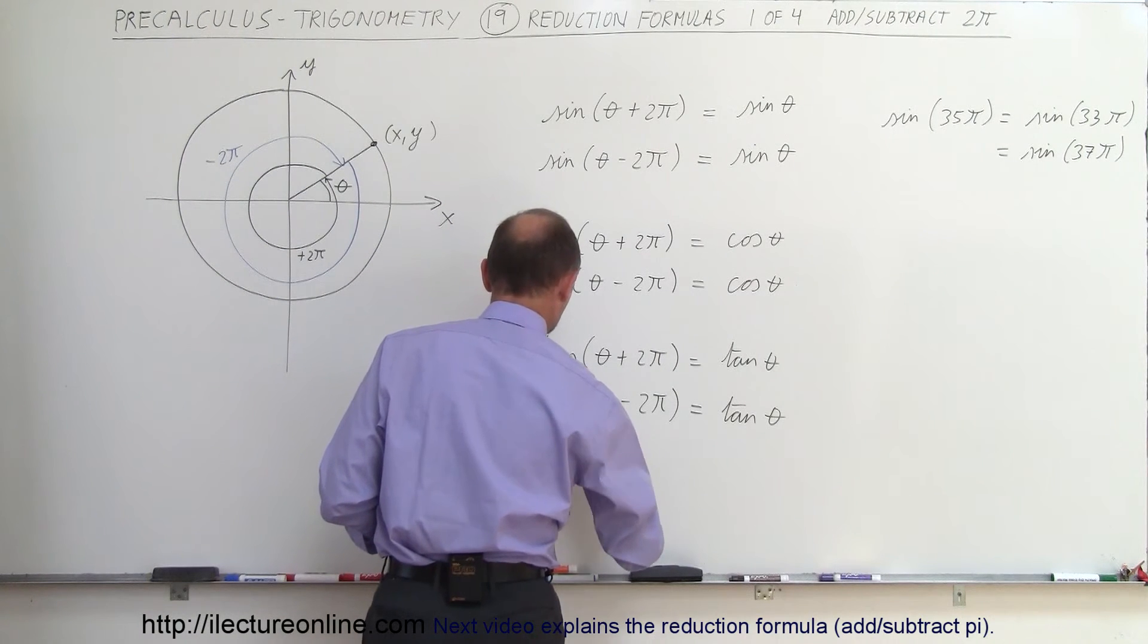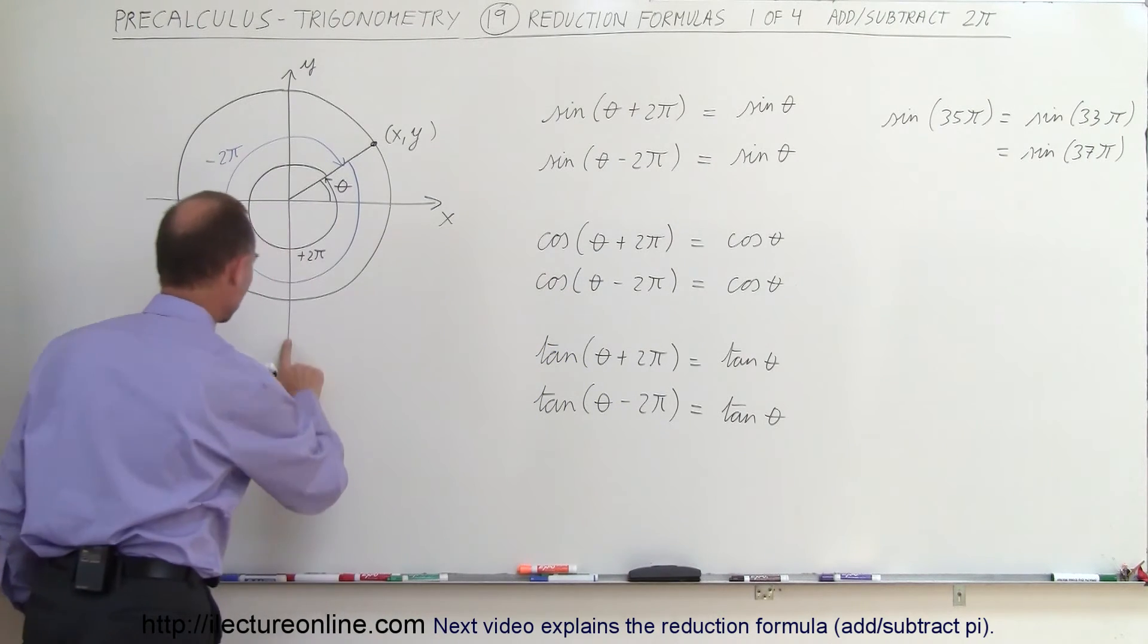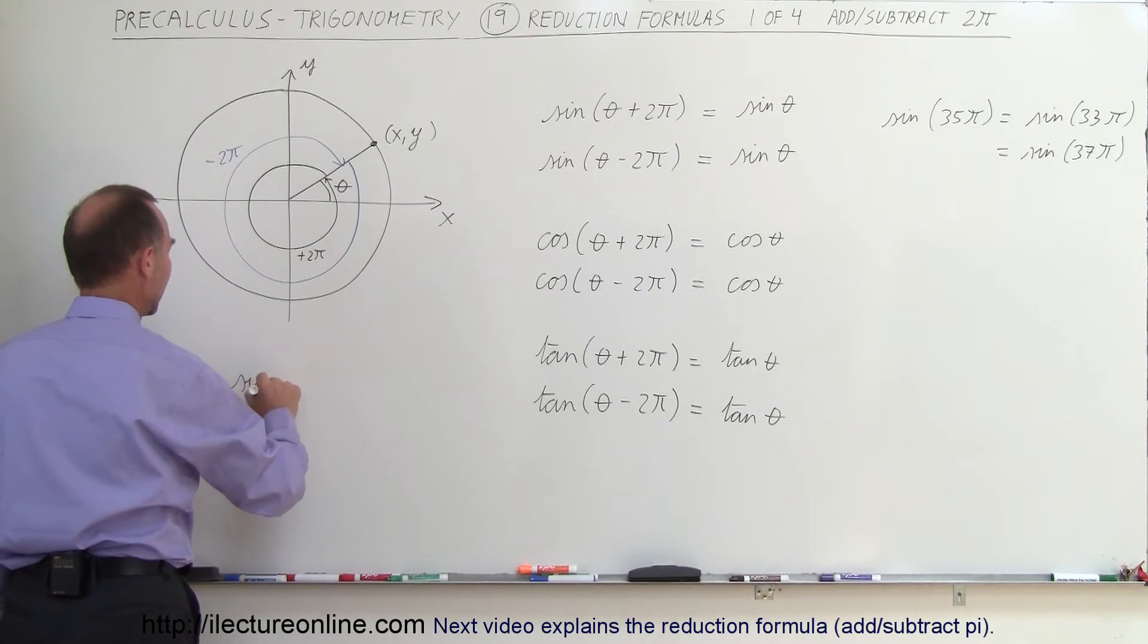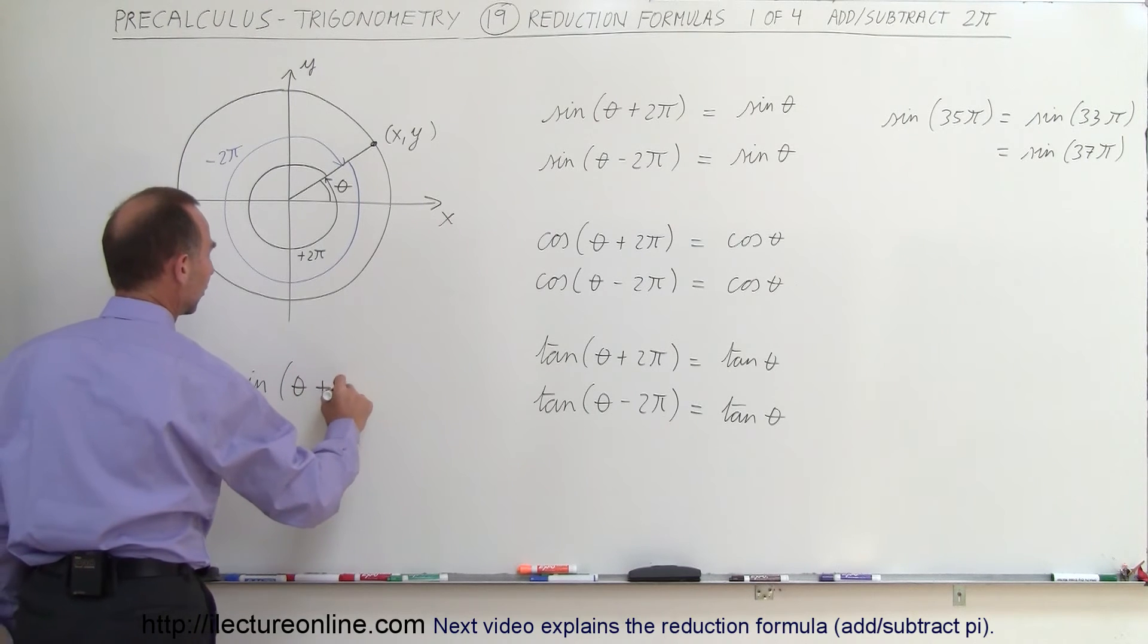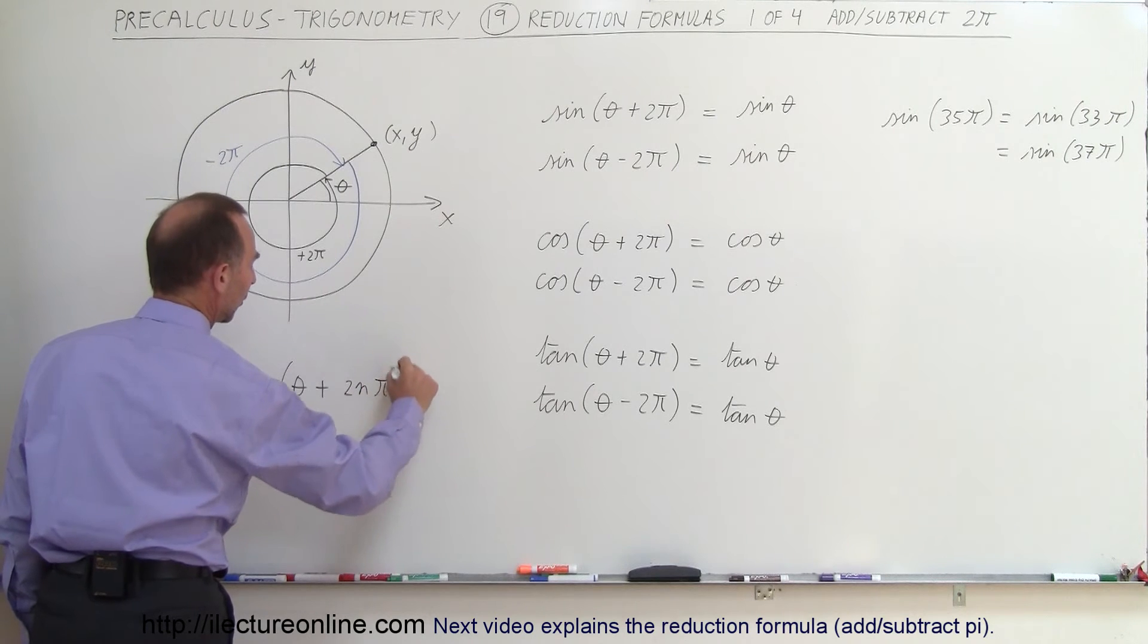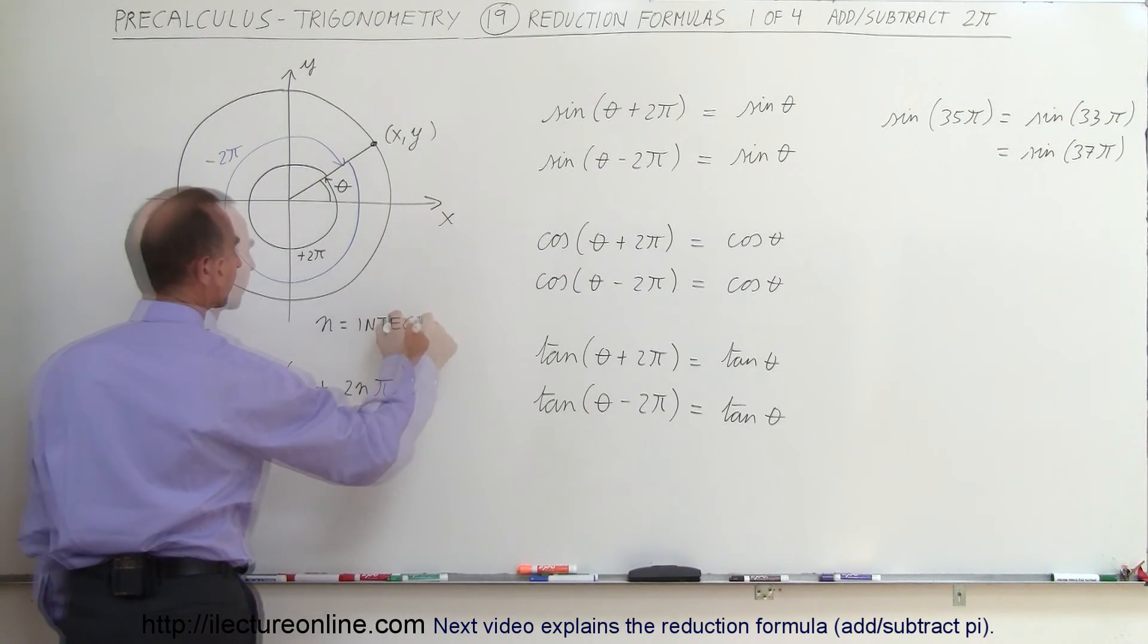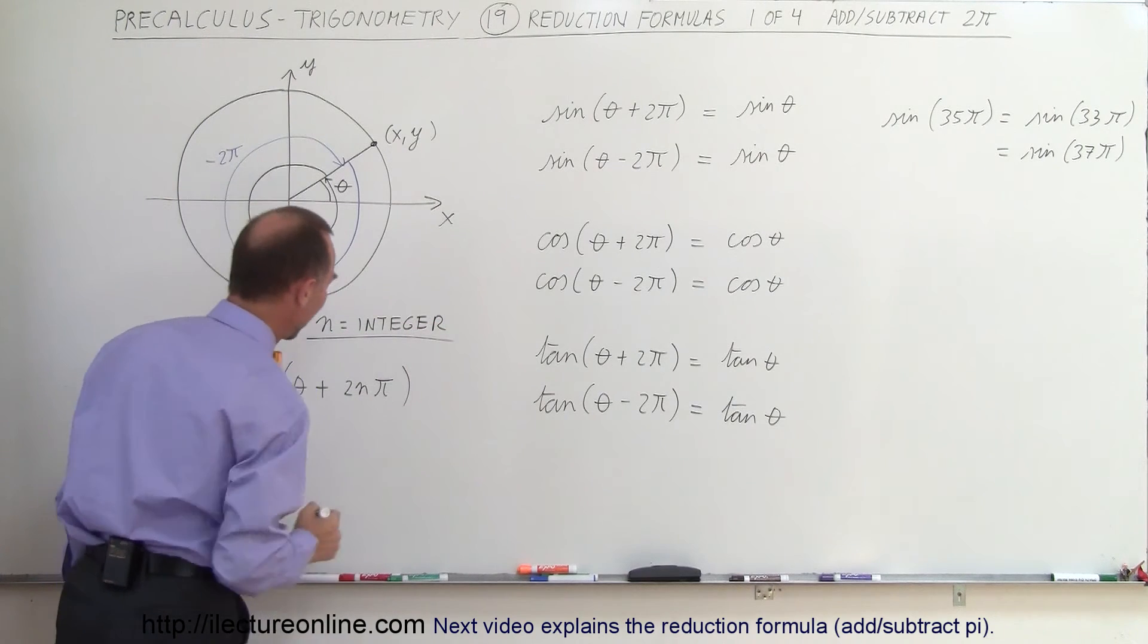In a more general form, I'll just use the sine here. Let me write in a more general form: the sine of some angle plus an even number, so 2n times π, where n is an integer. This is a very general way of writing that.